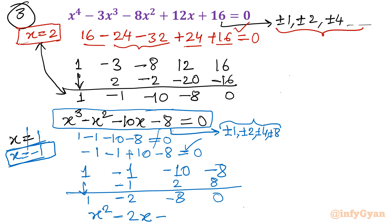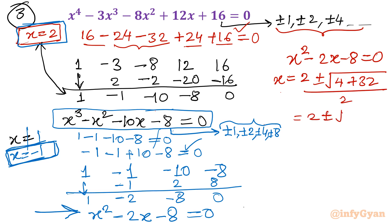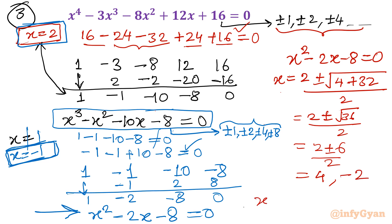Two solutions x equals 2 and x equals negative 1 are now confirmed. Solving x squared minus 2x minus 8 equals 0 using the quadratic formula: x equals 2 plus or minus the square root of 4 plus 32, all over 2, which is 2 plus or minus 6 over 2. Taking the plus sign gives 8 over 2 equals 4; taking the minus sign gives negative 4 over 2 equals negative 2. The complete solution set is x equals negative 1, 2, negative 2, and 4.